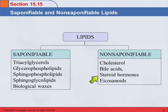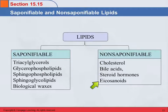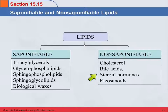These guys over here — cholesterol, bile acids, steroid hormones, and eicosanoids — do not have an ester linkage. And so they cannot be saponified. You put those in a base, and you can't hydrolyze them in a basic solution.